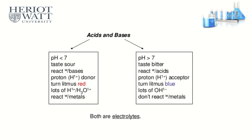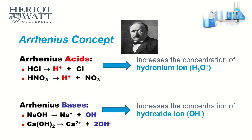Both acids and bases are electrolytes, meaning they have free-moving ions and are able to conduct electricity. The first theory is the Arrhenius concept. Arrhenius theory defines an acid as a compound that is able to dissolve in water producing H⁺. For example, HCl and HNO₃ both dissolve in water and dissociate to form high concentrations of H⁺.